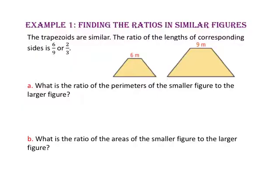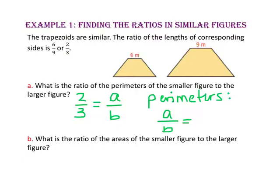In example 1, we will find the ratios in similar figures. The trapezoids are similar. The ratio of the lengths of the corresponding sides is 6 to 9, or 2 to 3. For part A, what is the ratio of the perimeters of the smaller figure to the larger figure? The scale factor of the smaller trapezoid to the larger trapezoid is 2 to 3, or A to B. Since the ratio of the perimeters is also A to B, the ratio of the perimeters will be 2 to 3.